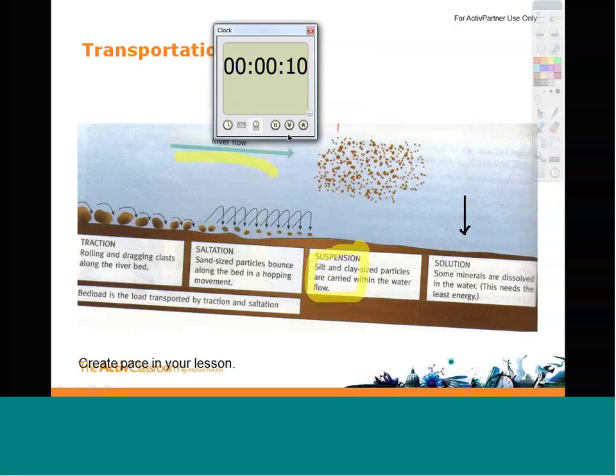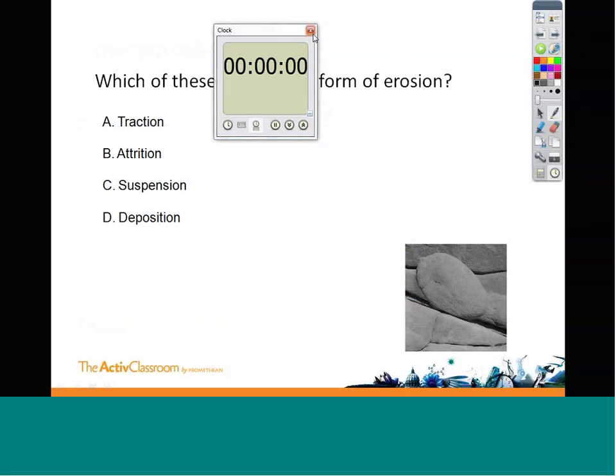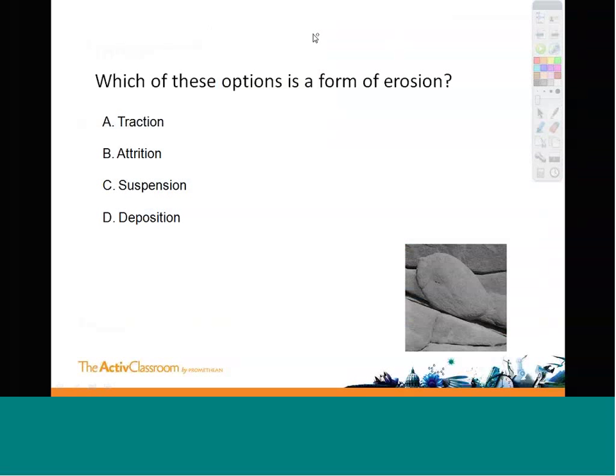For the next couple of activities, I'm going to utilize the different toolbars available to me — firstly, the Voting toolbar. We often ask questions throughout our lessons to gain understanding from students. Here, the options we have previously looked at in the lesson are presented to them. By using Promethean's Learner Response system and the express poll, I'm able to see who in my class can recognise which of these is not a form of erosion.